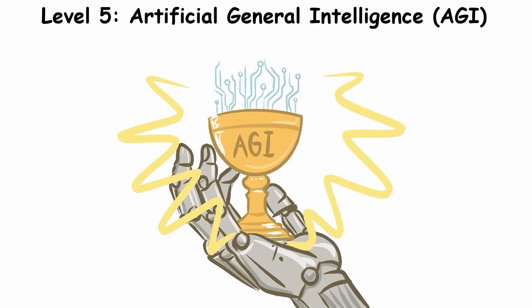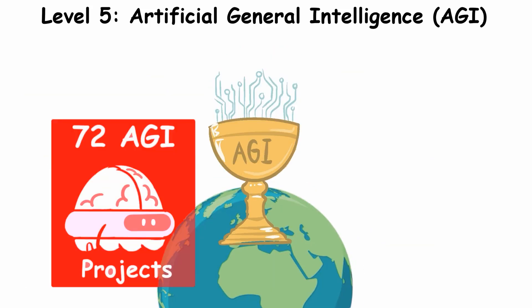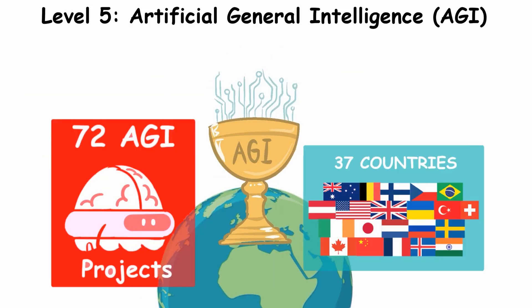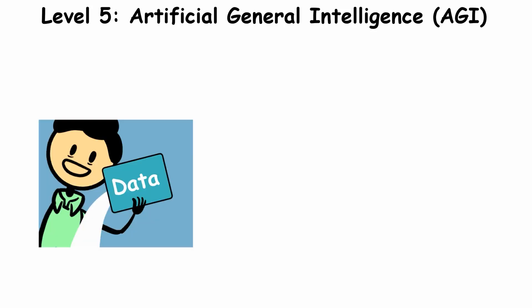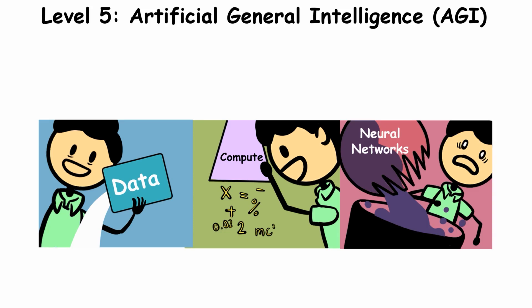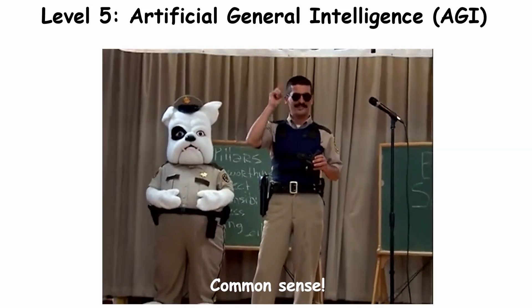Creating AGI is the holy grail for AI labs and companies like OpenAI, Google, and Meta. A 2020 survey found 72 AGI projects across 37 countries. AGI might emerge from scaling today's deep learning with more data and compute, or from entirely new methods that unlock human-like common sense.